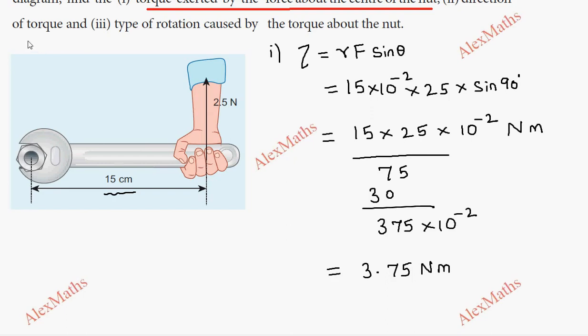Subdivision 2 asks for the direction of the torque. The direction of the torque is perpendicular to the paper, out of the paper.